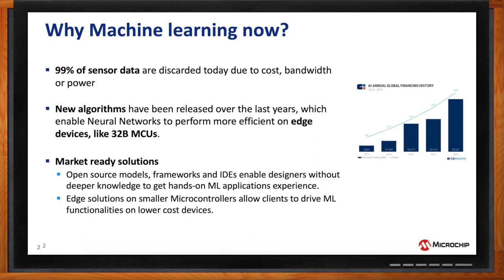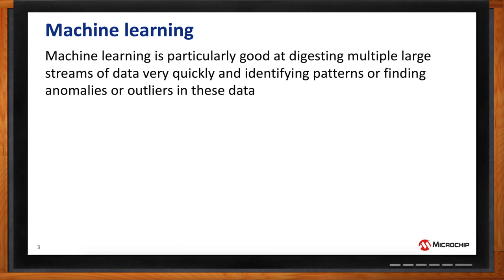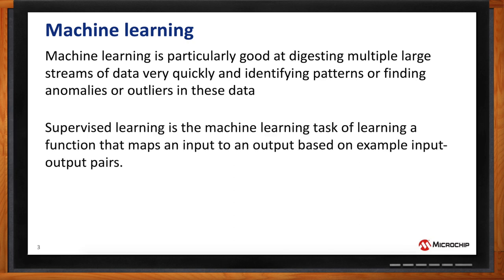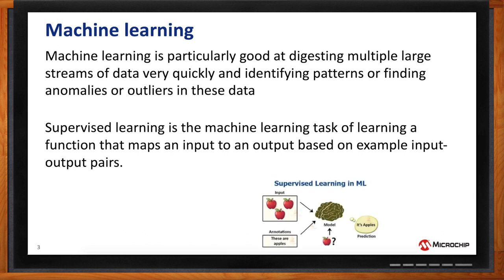Machine learning is really good at crunching data very quickly and finding outliers or anomalies in a flow of data, so we can create algorithms which are much more efficient in prediction than before. At Microchip we are focusing more on what we call supervised learning — a subset of machine learning. For example, you train a model to recognize an apple by showing it pictures of apples, and the next time you show a new picture of an apple, it knows what it is. That's why we call it supervised learning.